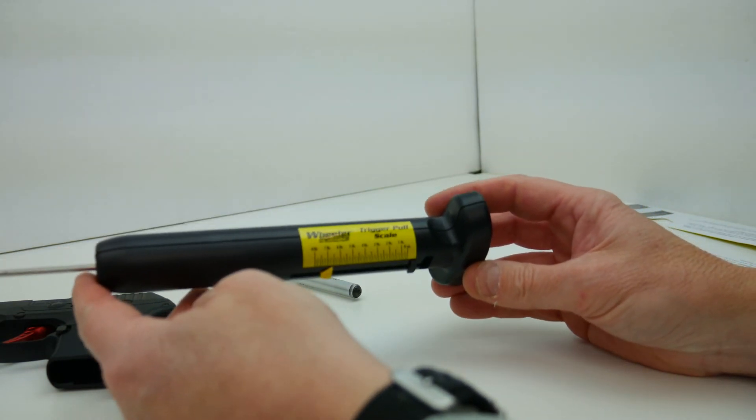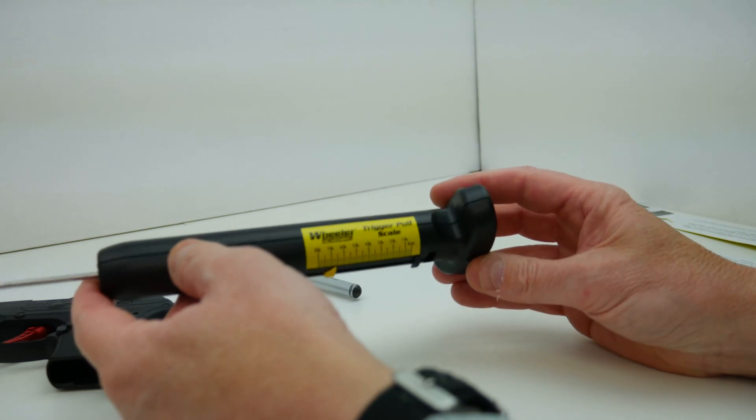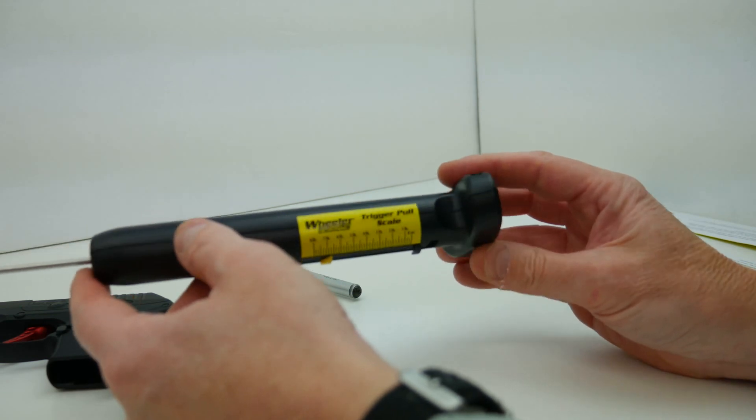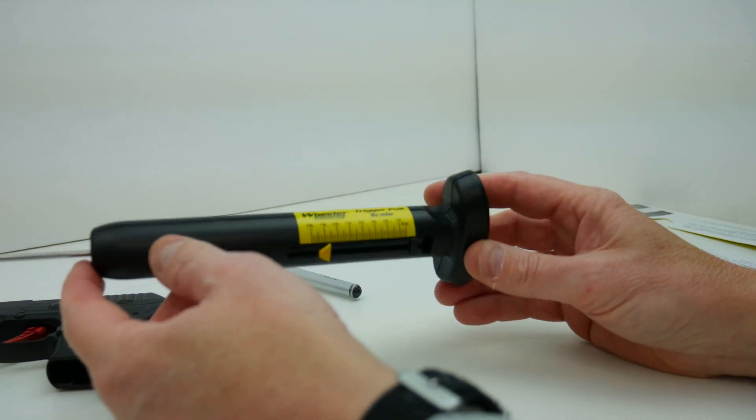Best thing to do is to have this on hand, measure your old trigger or your old springs first, get an idea of what the average pull weight is, then swap your parts out and test it again. That way you can get an accurate reading or semi-accurate reading of what the differences are.